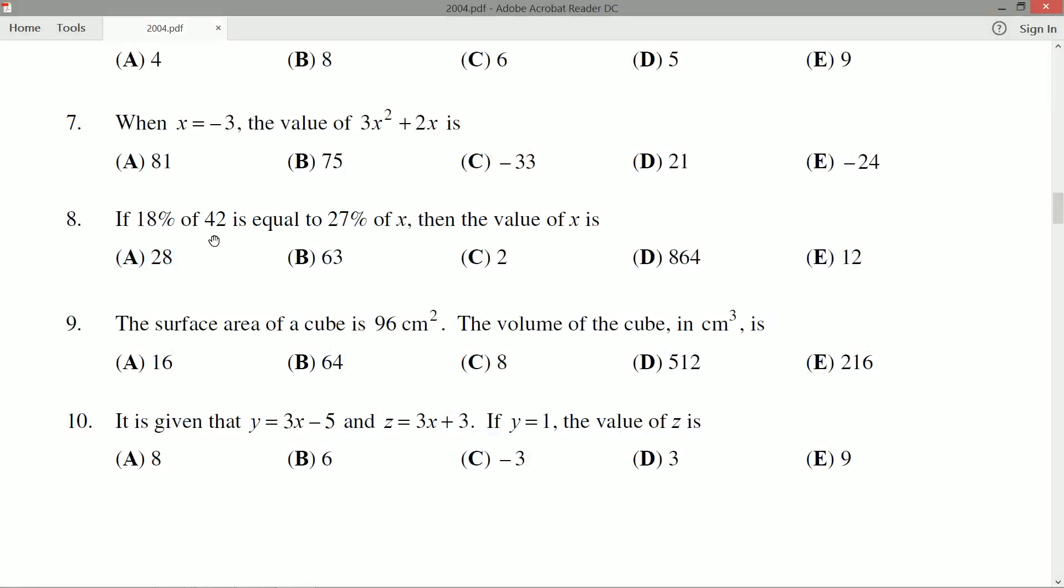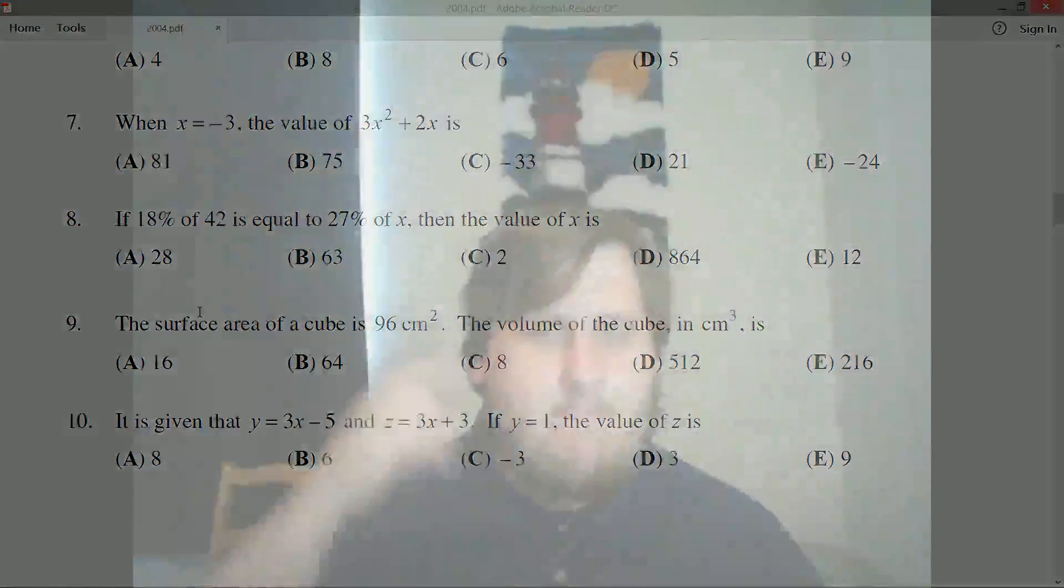Does this make sense? 18 percent is less than 27 percent, so we would expect a bigger portion of a small number would be equal to a small portion of a big number. So we should expect x to be less than 42. 28, 2, and 12 are the candidates, and 28 is certainly the best suited. Just an extra little mental check that we can do if we have the time to spare.